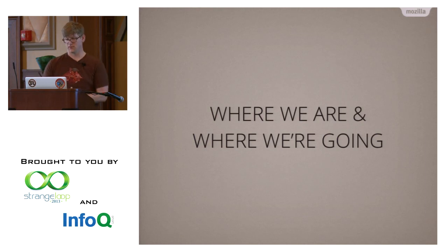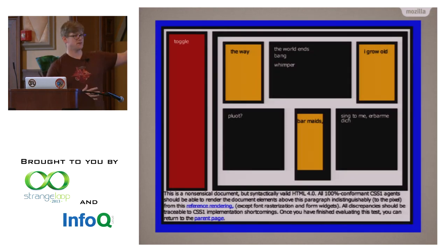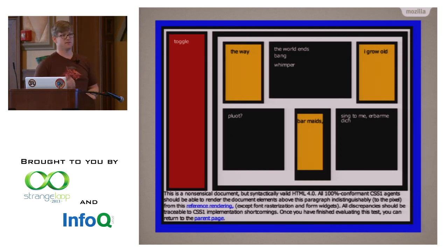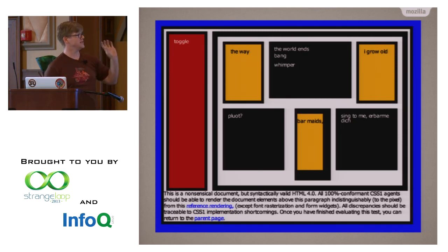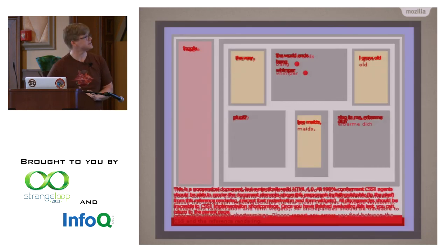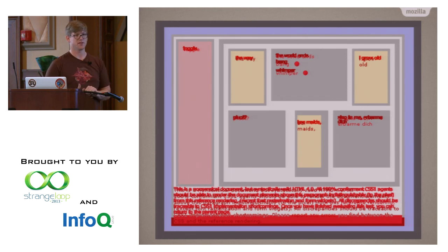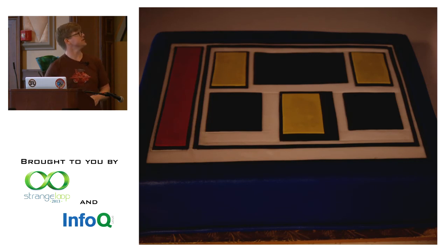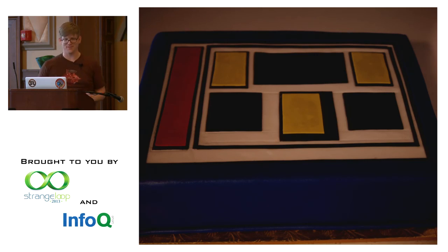So where are we and where are we going? We just managed to pass Acid1. This is Servo's rendering of Acid1 — it's a layout-focused test that covers floats, the CSS box model, asymmetric borders, border sizes, margins, padding, and all that. Basically, if you can pass Acid1, Wikipedia starts to look kind of like a regular web page. This is the reference image difference from our rendering — you're allowed to have differences in text rendering since that's almost impossible to keep the same across platforms. We thought this was really cool, so we celebrated and had a cake made — this cake almost passes Acid1 itself.